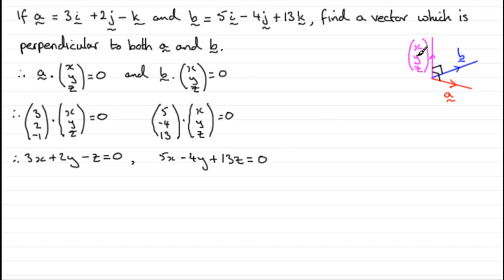Now, there is no unique vector here that is going to be perpendicular to A and B. If I have one solution for x, y, z, I could easily double it, treble it, halve it, or multiply it by minus 1, it would still be a vector that is perpendicular to both A and B. So there's no unique solution. I've got three unknowns here and only two equations. So, all I need to do is set either x, y, or z to some non-zero number. Let's suppose we let z equal 1.